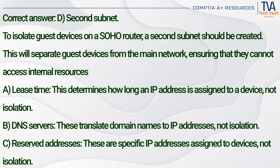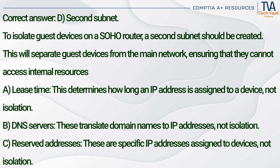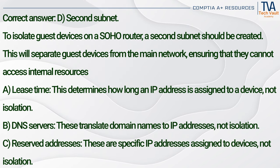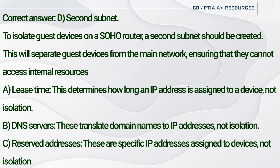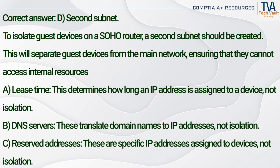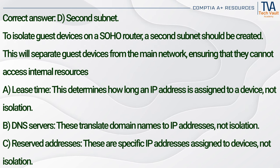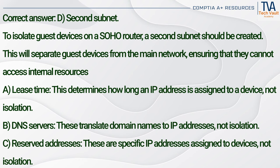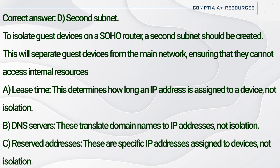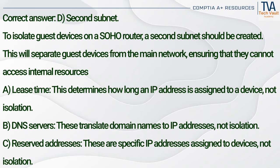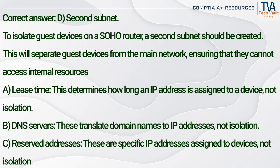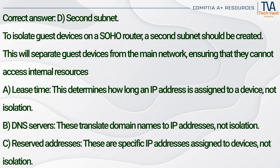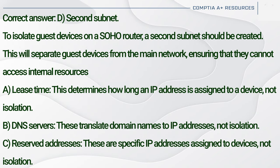Correct answer: D. Second subnet. To isolate guest devices on a SOHO router, a second subnet should be created. This will separate guest devices from the main network, ensuring that they cannot access internal resources. Lease time (A) determines how long an IP address is assigned to a device, not isolation. DNS servers (B) translate domain names to IP addresses, not isolation. Reserved addresses (C) are specific IP addresses assigned to devices, not isolation.